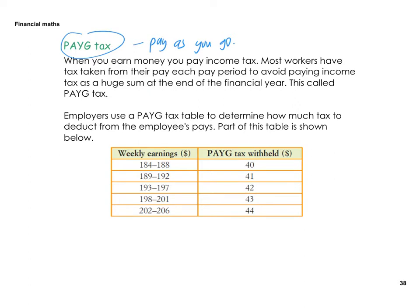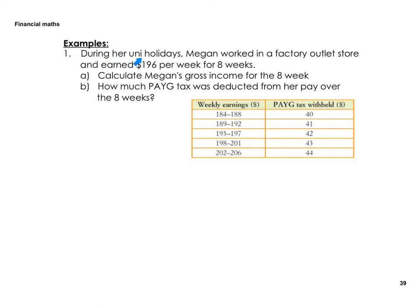Question one: During her university holidays, Megan worked in a factory outlet store and earned $196 per week for eight weeks. Part A: calculate Megan's gross income for the eight weeks. So gross income is 196 times 8, which equals $1,568.